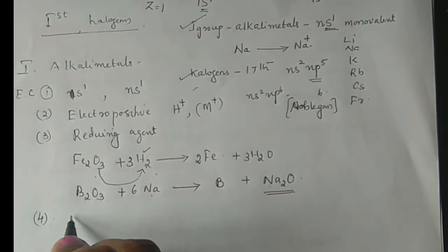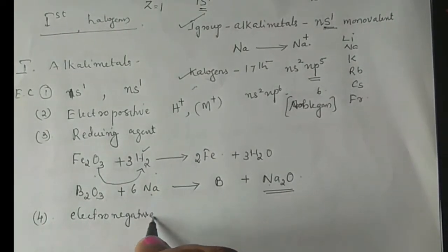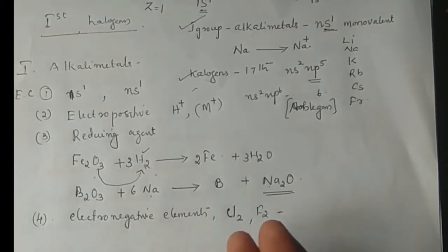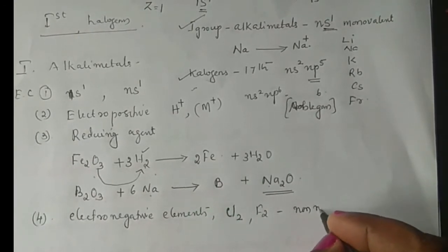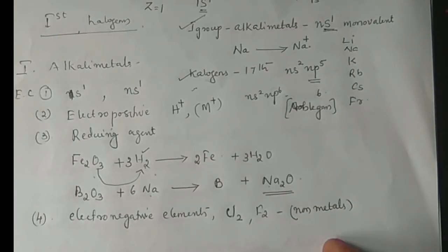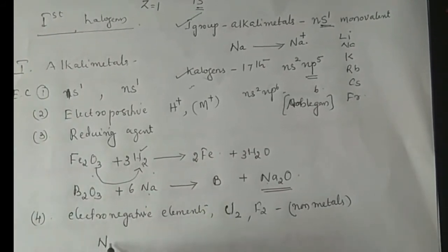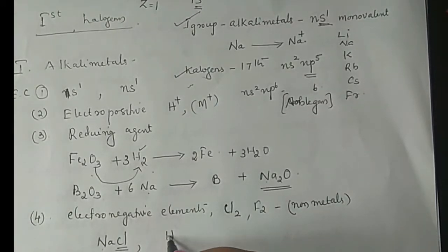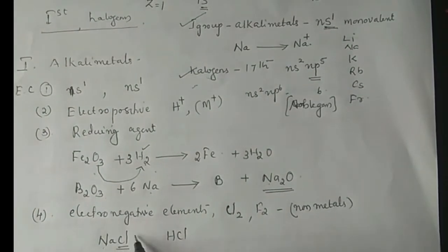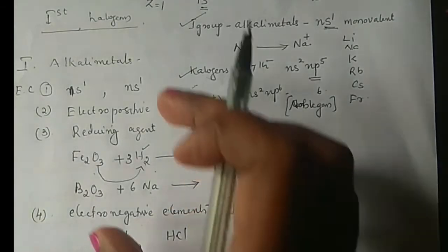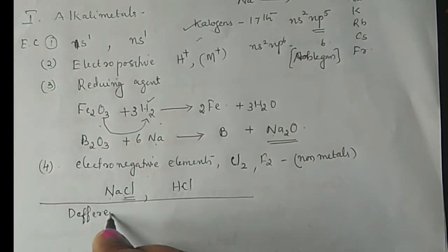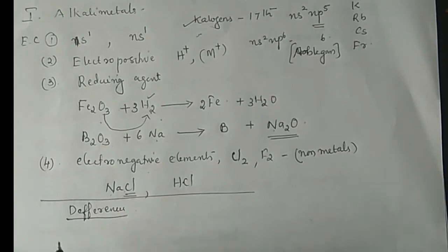Another similarity is affinity for electronegative elements, that is non-metals such as chlorine and fluorine. Just as alkali metals react with non-metals — for example, sodium reacts with chlorine to form sodium chloride — hydrogen similarly reacts with chlorine to form hydrogen chloride. These are similar properties between hydrogen and alkali metals.